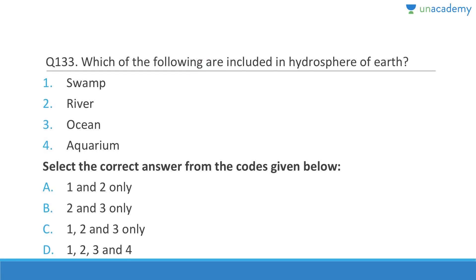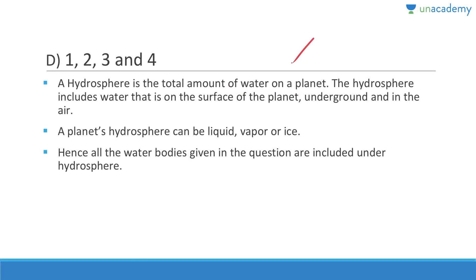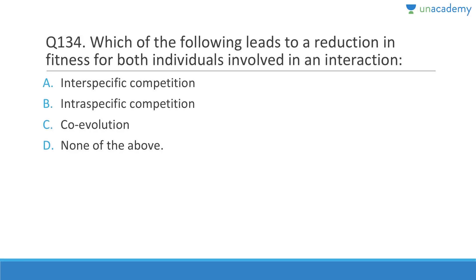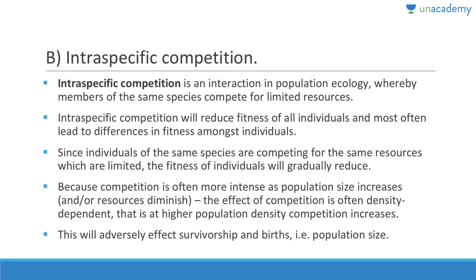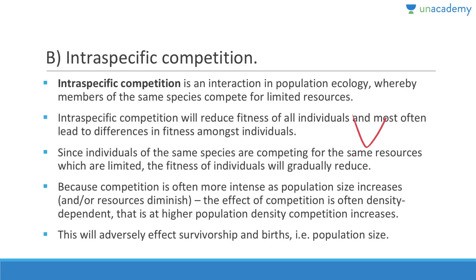Intraspecific competition reduces fitness for both individuals involved. When members of the same species compete for very limited resources, it will reduce fitness of all individuals. The fitness of individuals gradually declines as they are competing for the same resources. The effect is often density-dependent — at higher population density, competition increases, adversely affecting survivorship and birth rates.